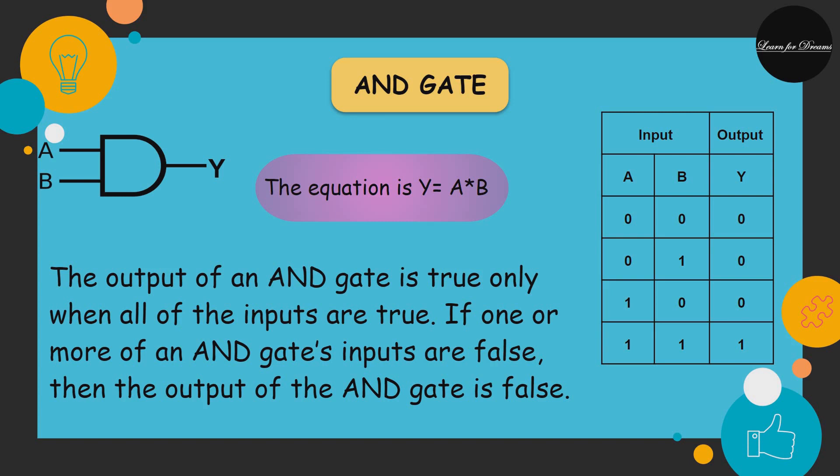If one or more of an AND gate's inputs are false, then the output of the AND gate is false. The truth table is formed according to the equation Y = A*B. If A is 1 and B is 1, then only the output is 1 or you can say high.